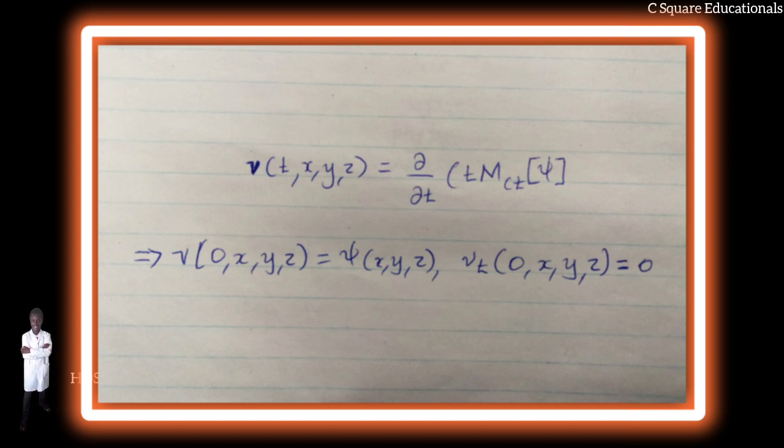if v(t,x,y,z) = ∂_t(mean value of ψ), then v(0,x,y,z) = ψ(x,y,z), v_t(0,x,y,z) = 0. These formulas provide solutions for the initial value problem for the wave equation.